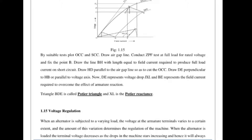When an alternator is subjected to varying load, the voltage at the armature terminals varies to a certain extent. The amount of this variation determines the voltage regulation of that machine. When the alternator is loaded — connected to lamps, fan load, or inductive load — based on the power factor, the voltage regulation may change. The voltage drop increases, hence the voltage falls below the rated voltage.